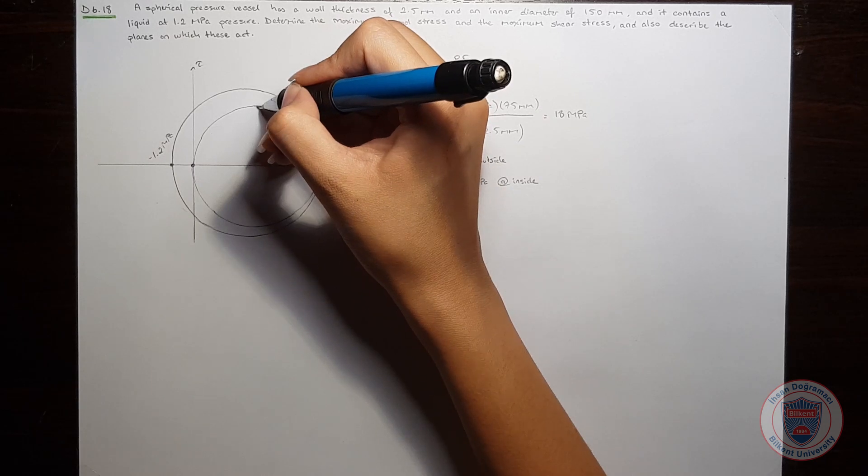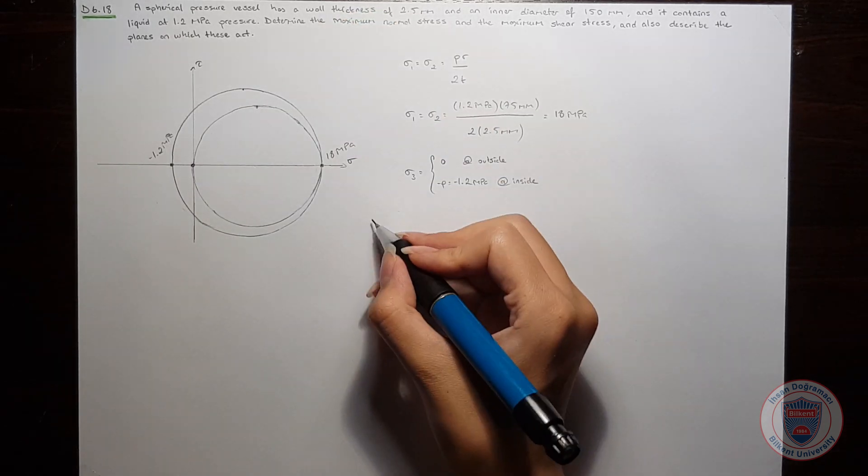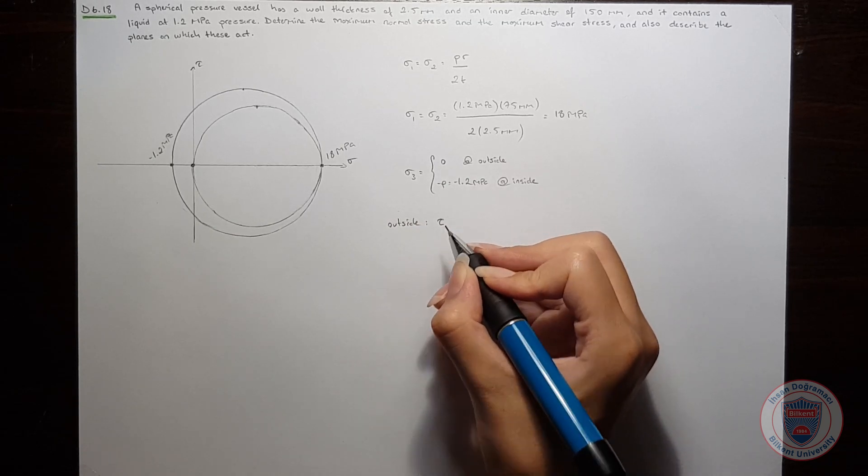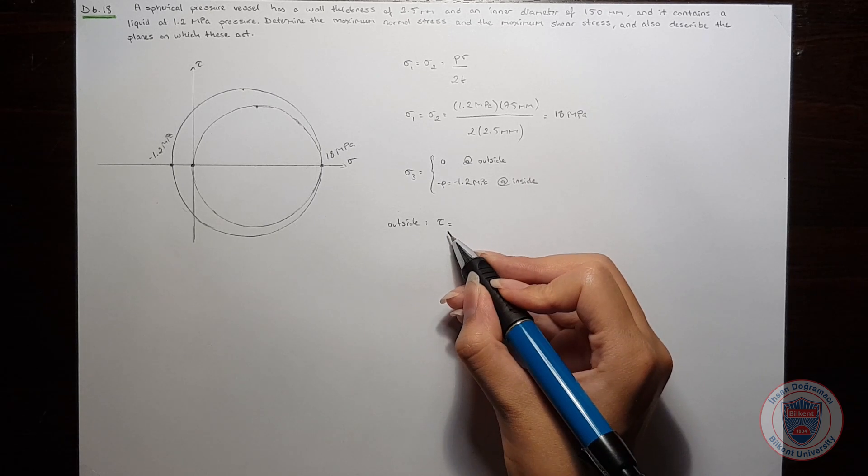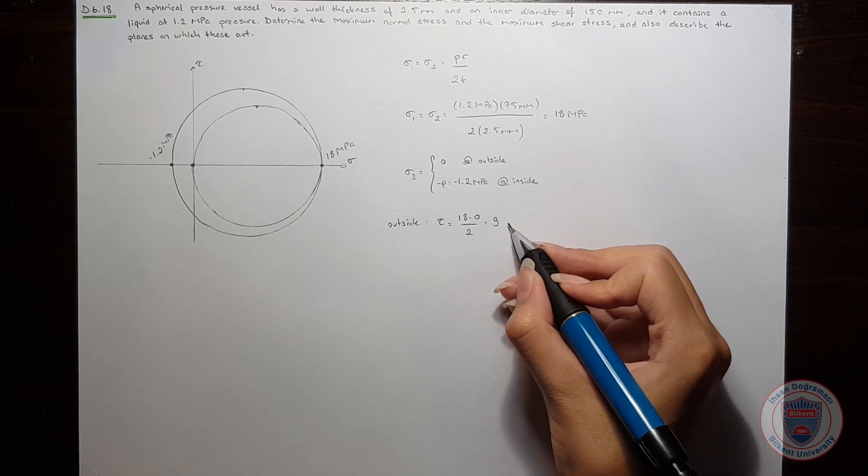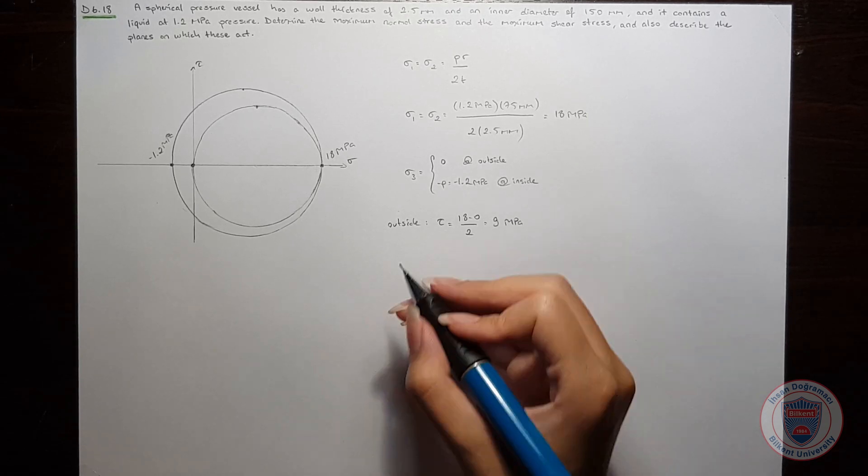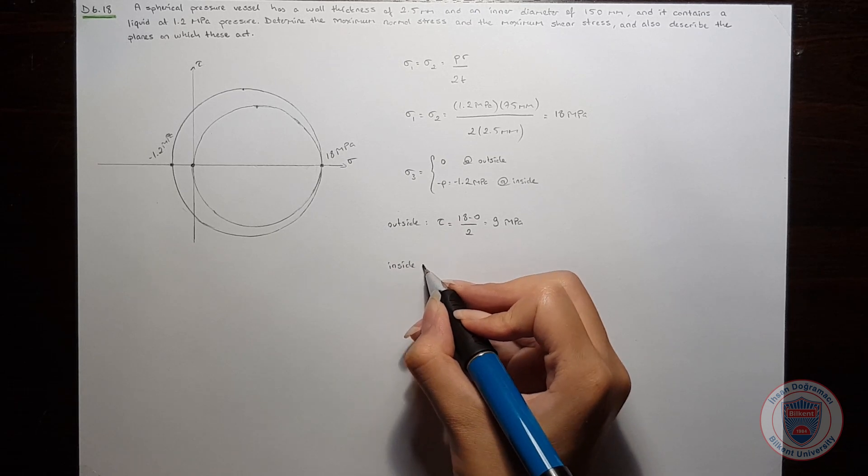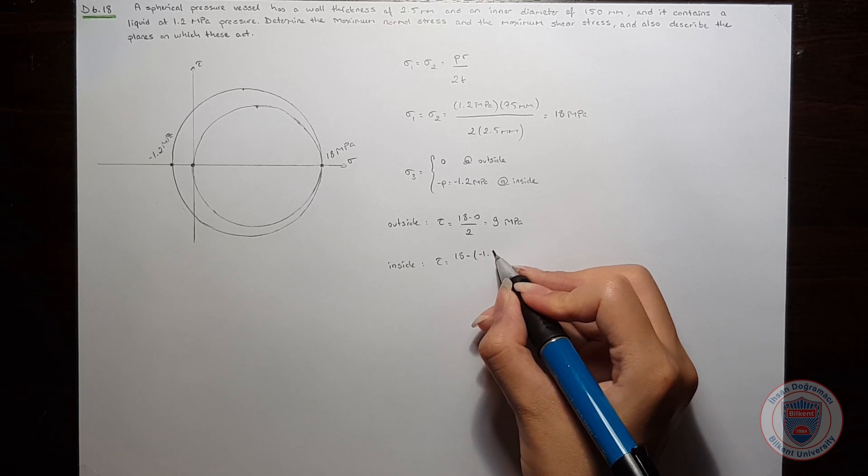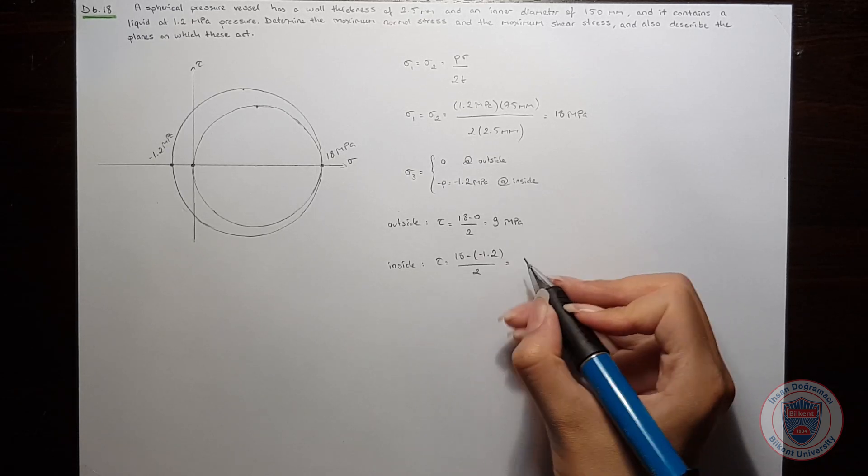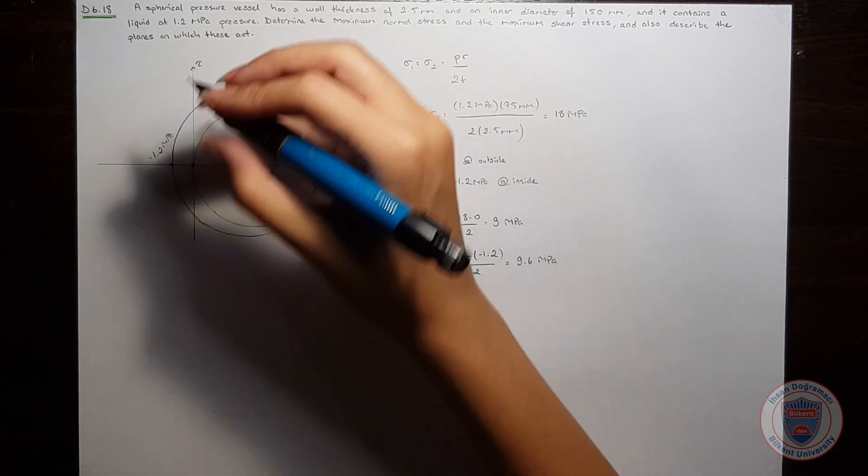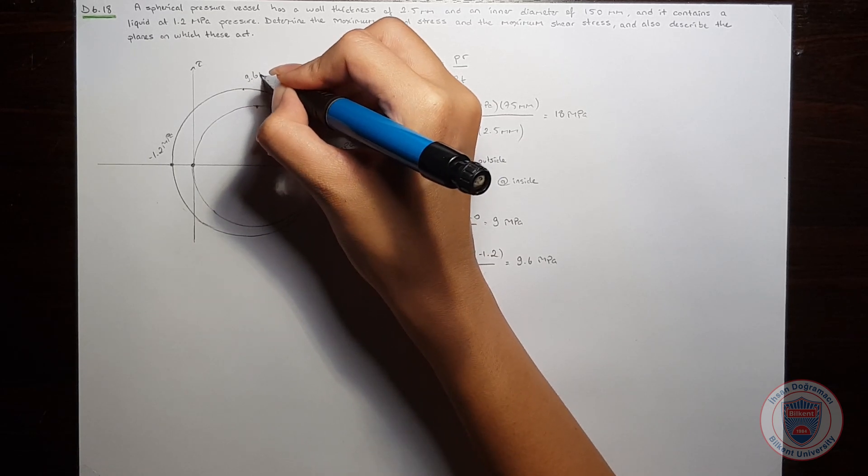We will have two shear stress values. On the outside, it will be equal to 18 minus 0 over 2, which is 9 MPa. On the inside it will be equal to 18 minus minus 1.2 over 2, which equals 9.6 MPa. So this point will be 9.6 MPa.